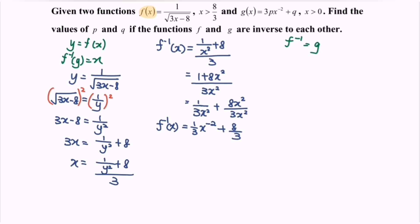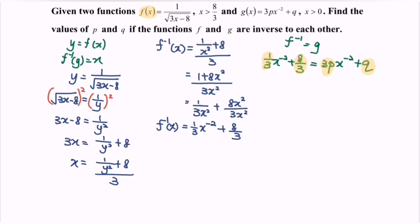Kindly compare this with g(x). So we have 1 over 3 times x to the power negative 2 plus 8 over 3 is equal to 3p times x to the power negative 2 plus q. We can see that 1 over 3 is equal to 3p, and 8 over 3 is equal to q. So finally, 3p is equal to 1 over 3, meaning p is equal to 1 over 9. And q is equal to 8 over 3.